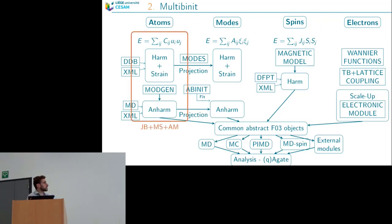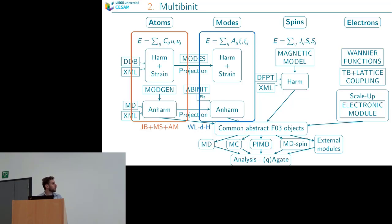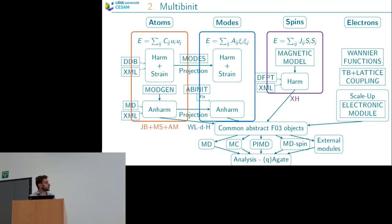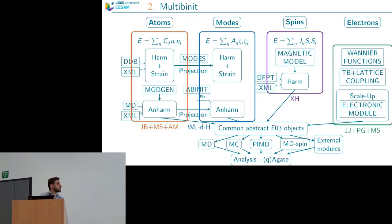I will mainly present the lattice part of the potential that Alexandre Martin, Marcus Schmidt and I worked on. William Lafarge-Diore developed the effective potential — he has a poster available. The spin potential was developed by Hichou, who will present his model two talks after me. The electronic potential is by Javier, Pablo, and Marcus, and Marcus will present the electron-lattice coupling afterwards.